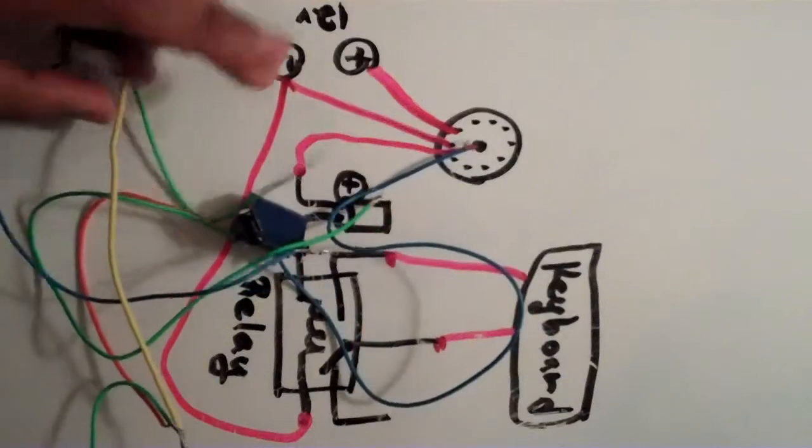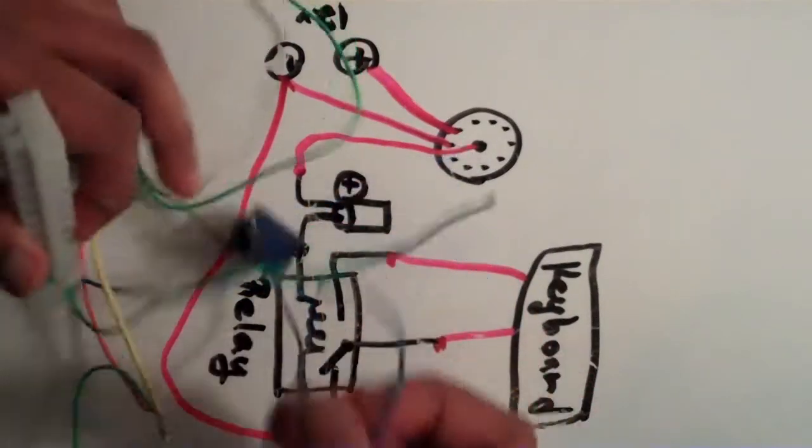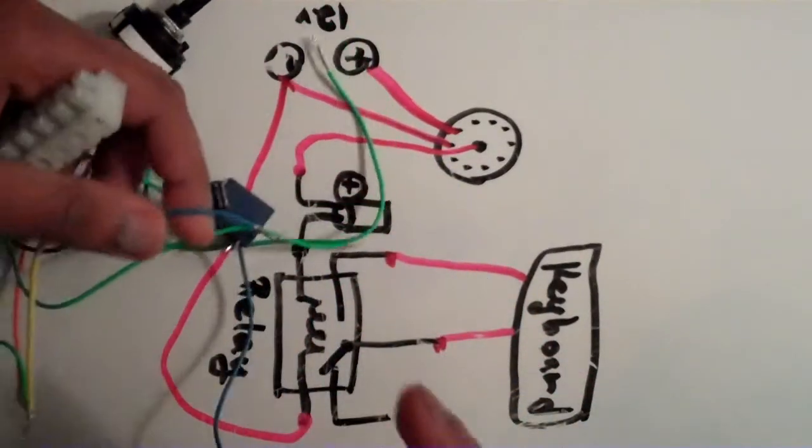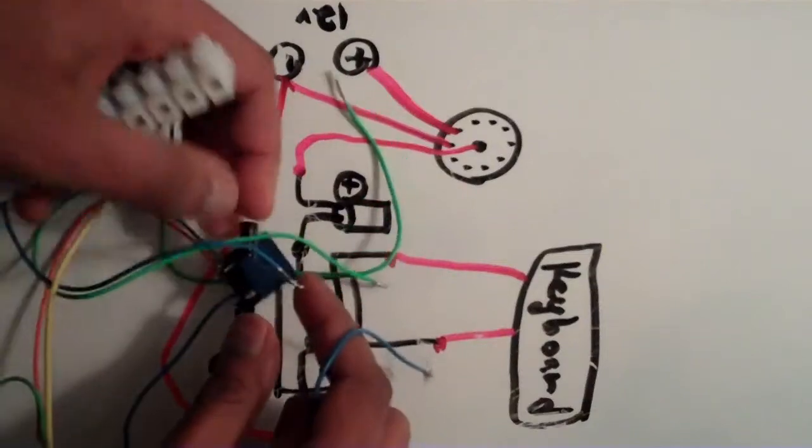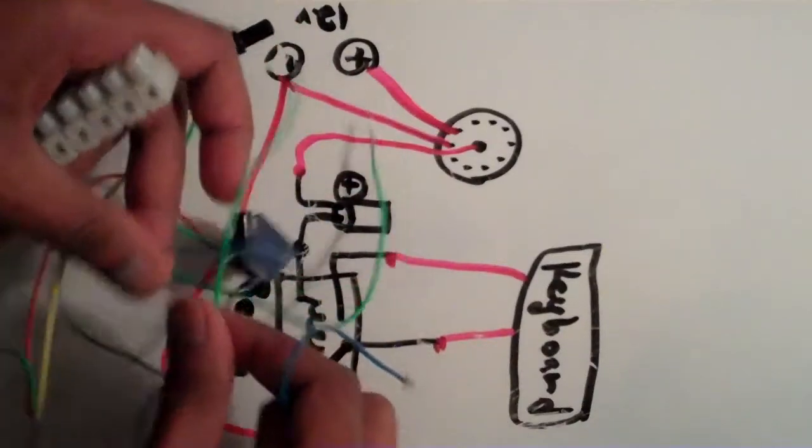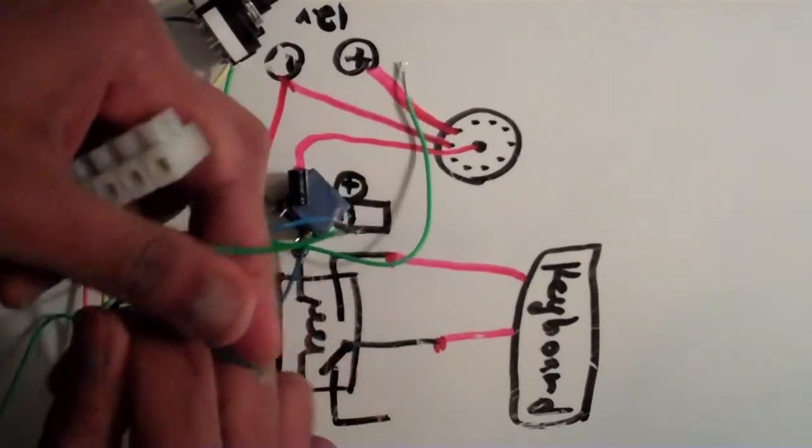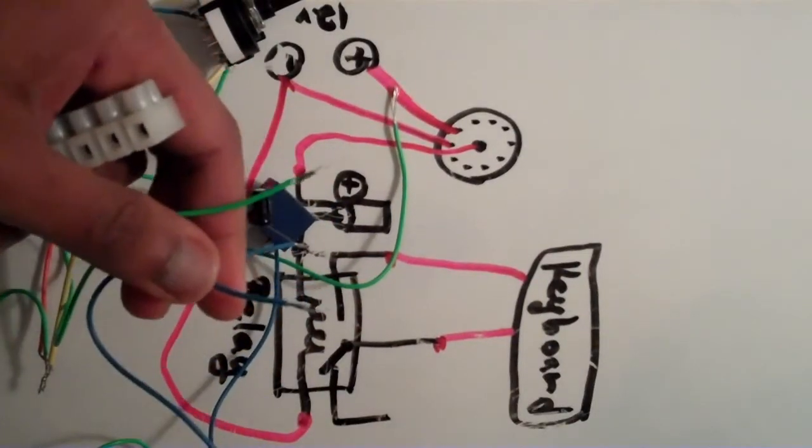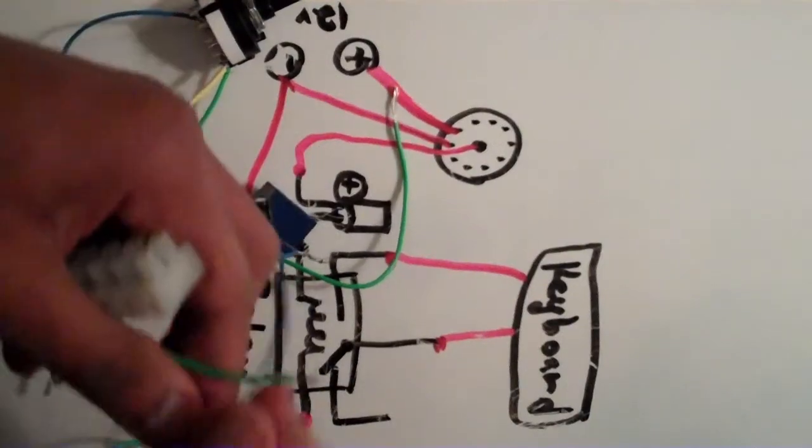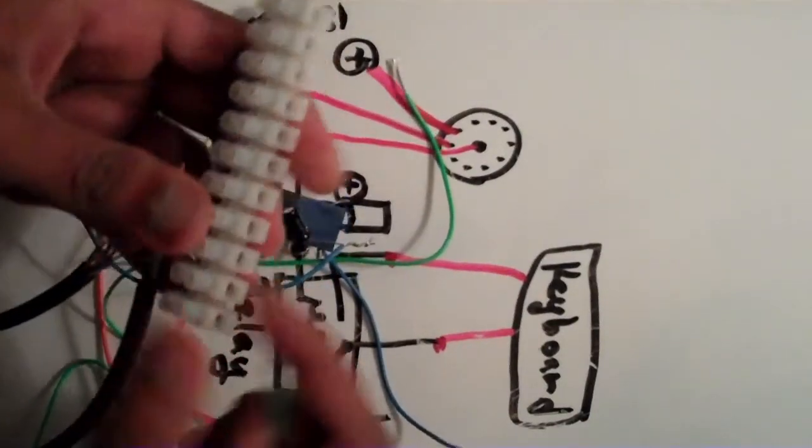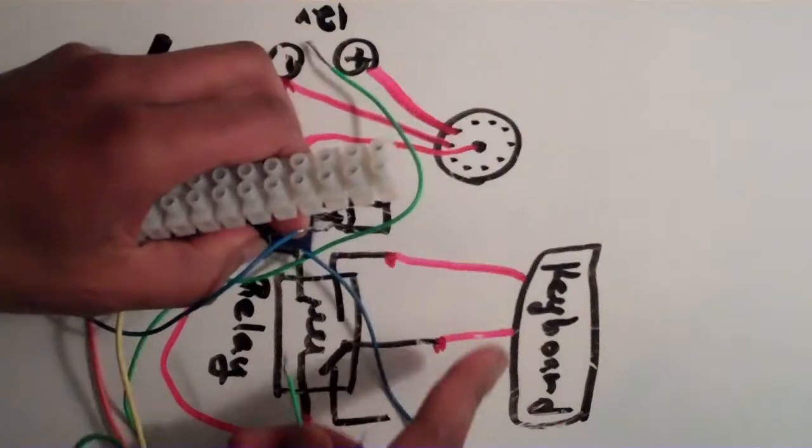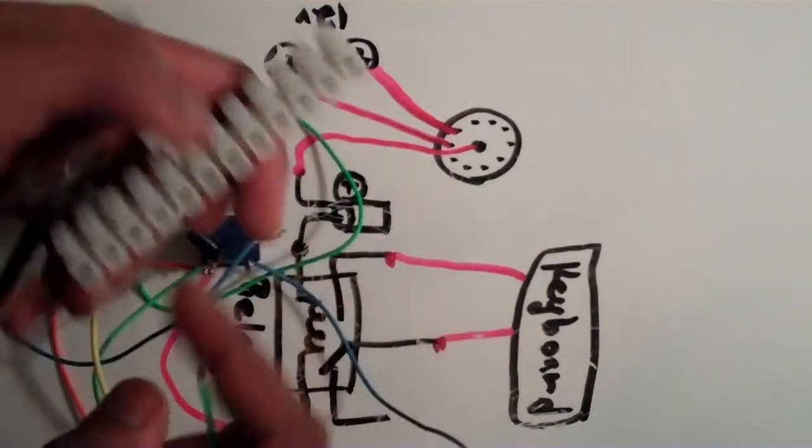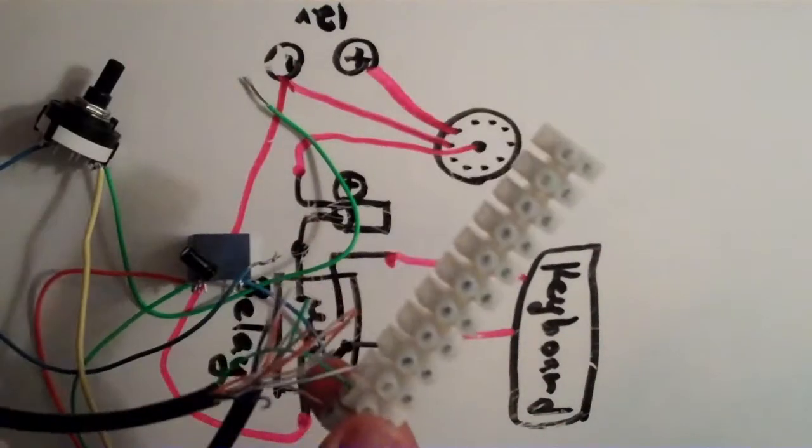Now connecting this up to the keyboard—I set the settings on Flight Simulator so that the number six button on the keyboard will toggle the engine start switch. I'm going to connect these keyboard leads right here from the relay to the two wires from the keyboard emulator that corresponds to the number six key on the keyboard.